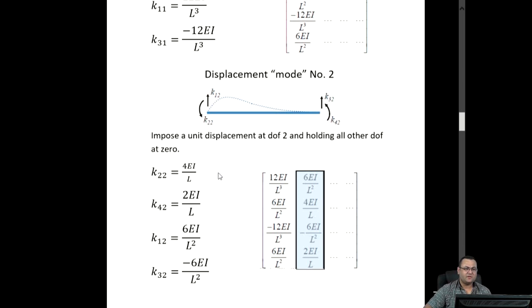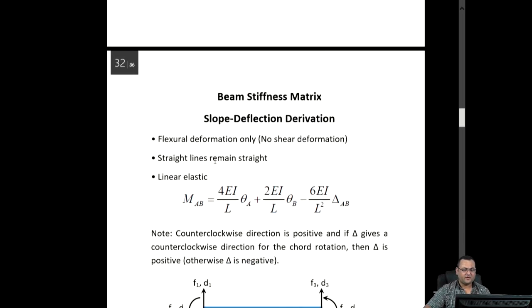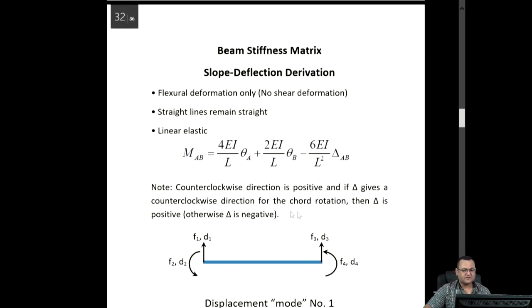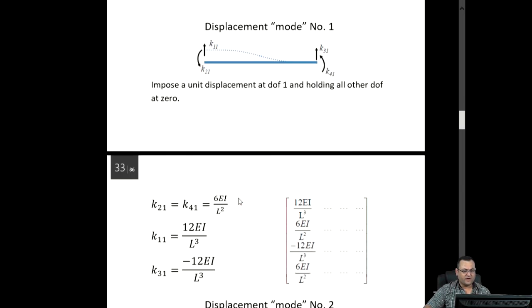Using the slope deflection equation, we find K22 equals 4EI over L, because now we have a rotation at the near end A. So 4EI over L times theta A, which is 1 (counter-clockwise, positive sign). Theta B is 0 and we have no delta. So MAB, which is K22, equals 4EI over L.